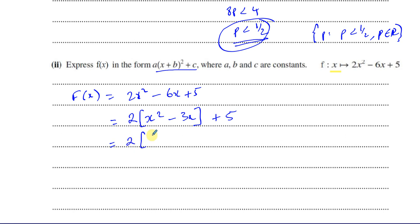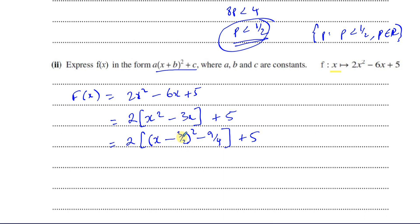Inside the bracket, I write (x − 3/2)². Expanding this gives x² − 3x + 9/4, but I don't want the 9/4, so I subtract it: 2(x − 3/2)² − 9/4) + 5. When expanded, (x − 3/2)² gives x² − (3/2)x − (3/2)x + 9/4 = x² − 3x + 9/4, and the correction term removes the unwanted constant.